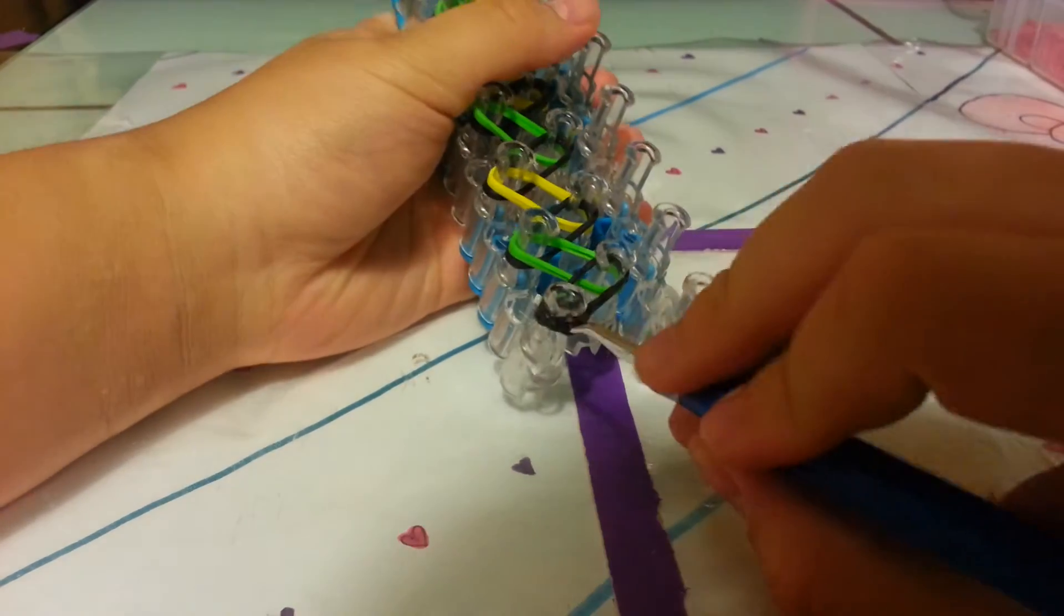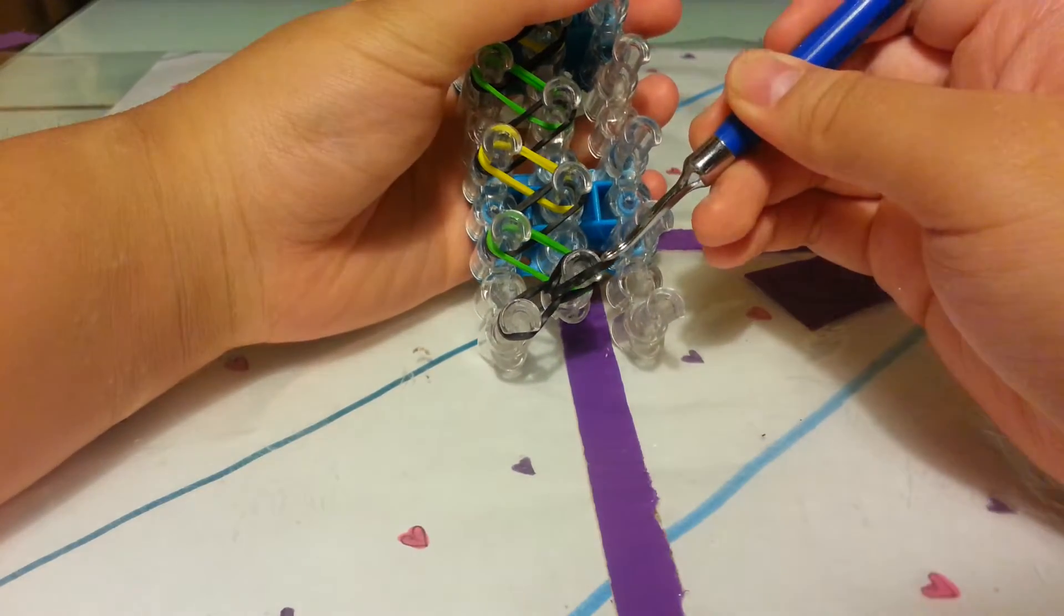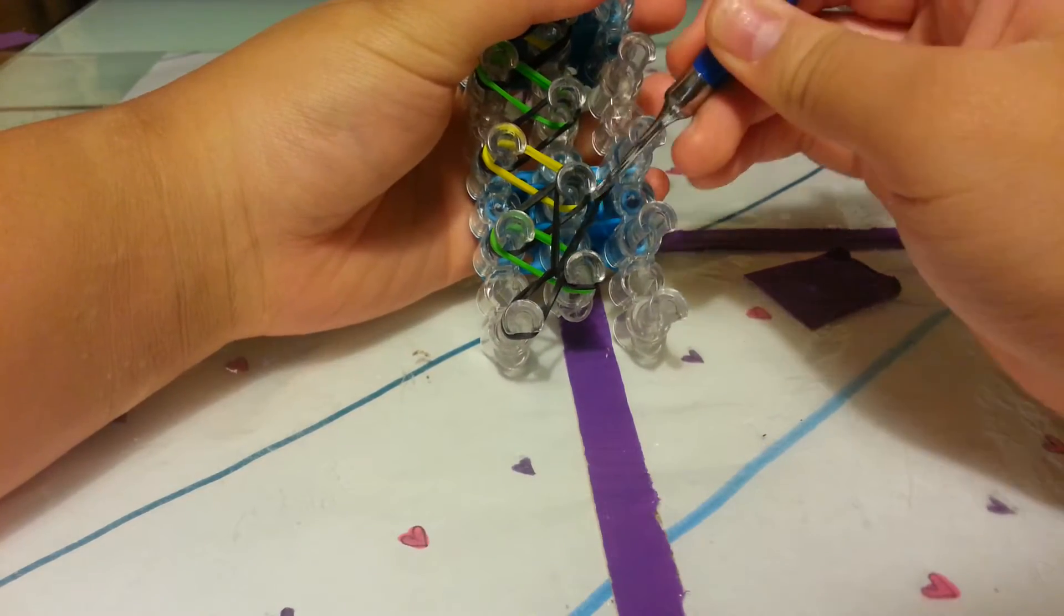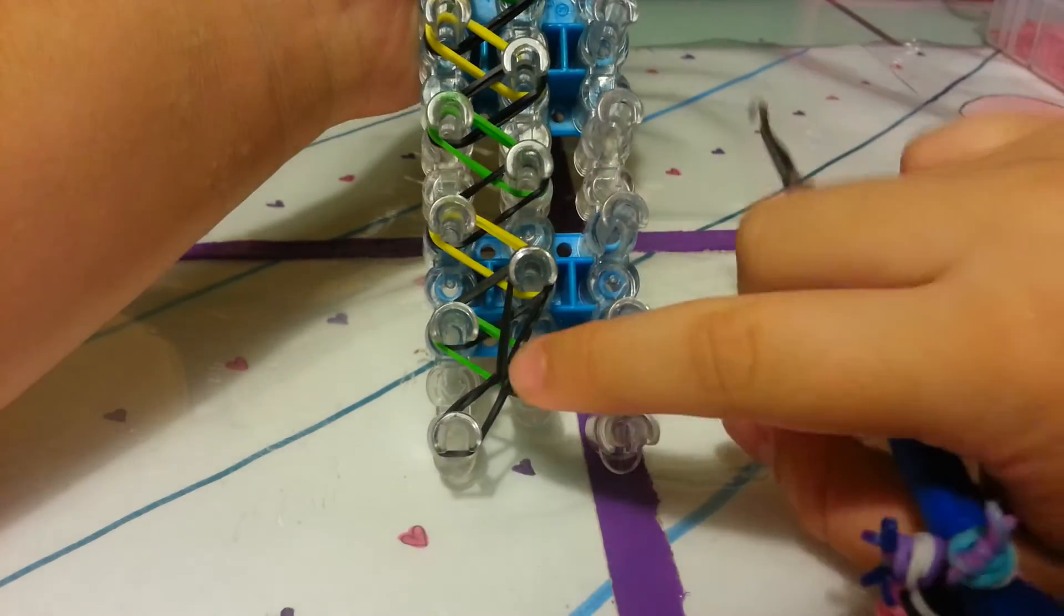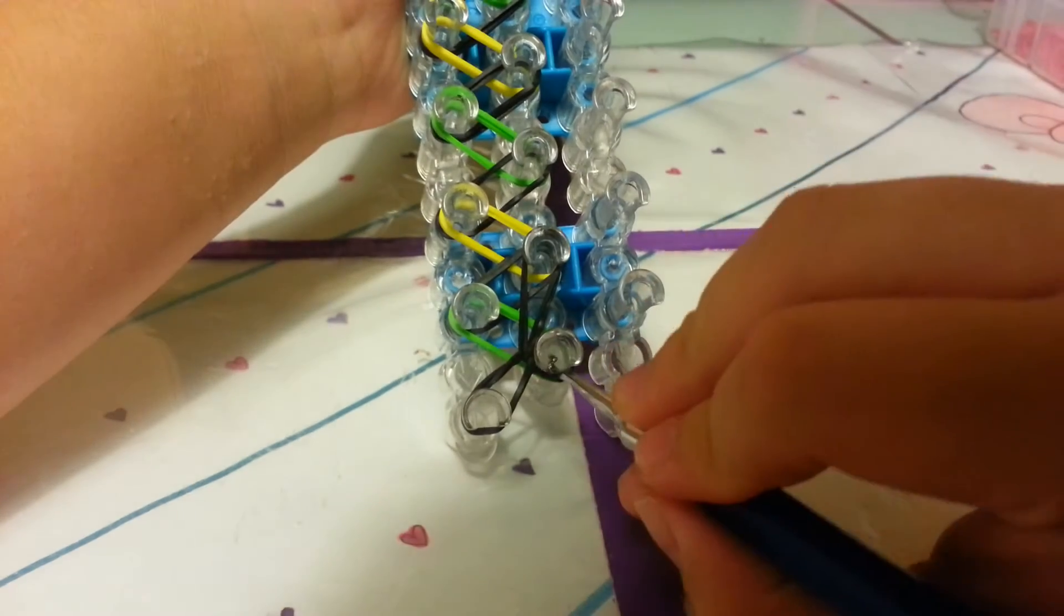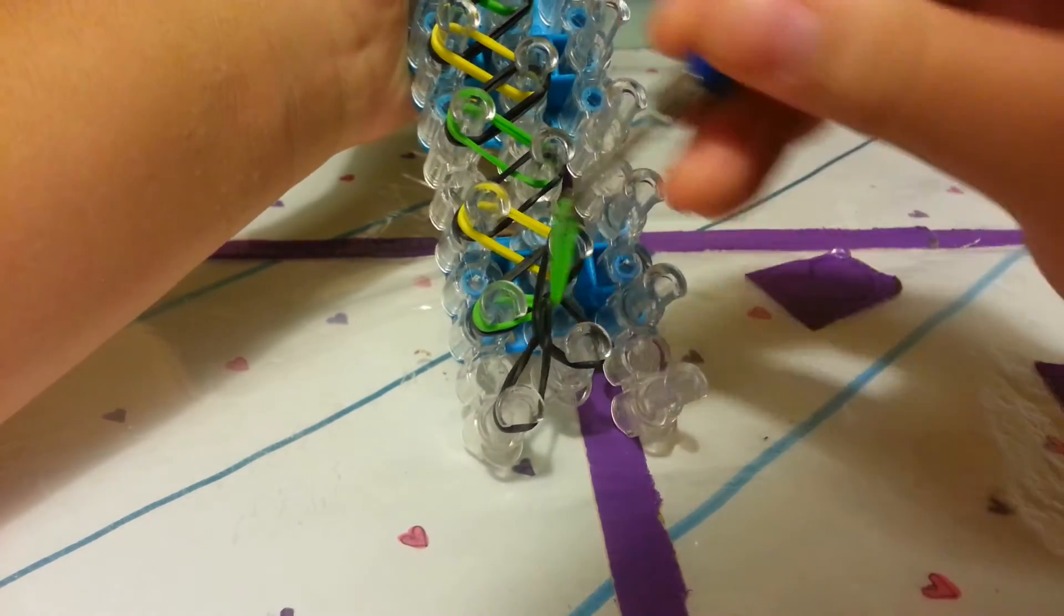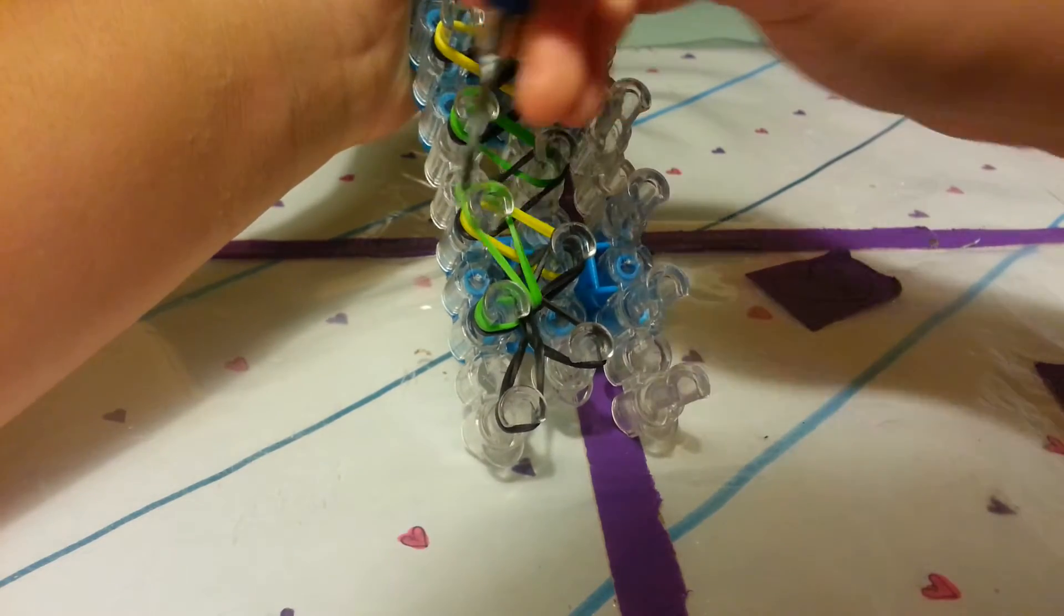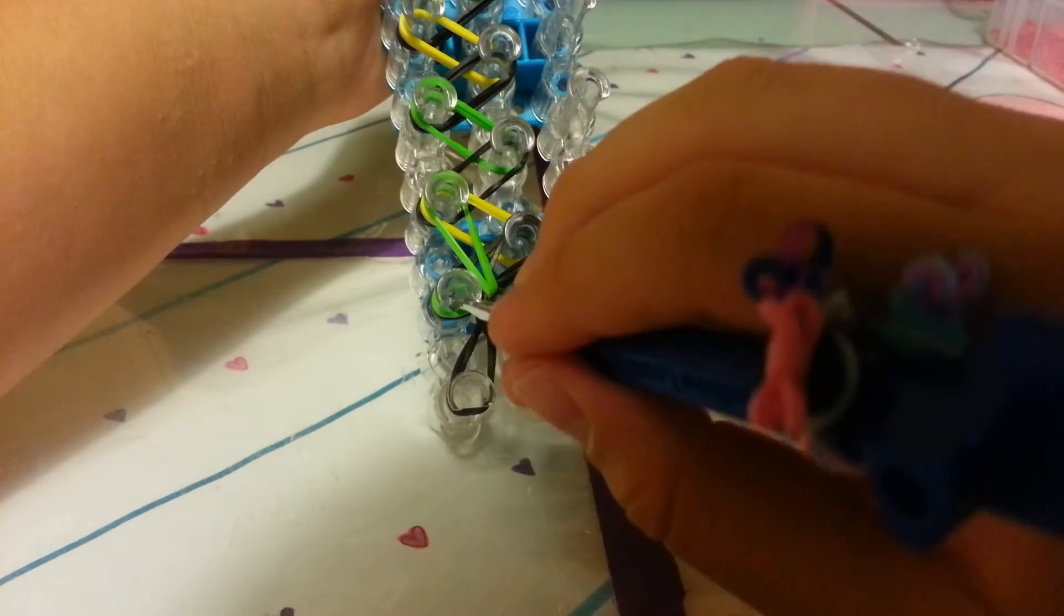Instead of looping it on this side, you want to go up one peg. When you're doing a single chain, you usually go on this peg, but this time you do it on this peg. Then you go in this peg right here, grab the last two bands, and stretch it across diagonally to this peg. You want to keep on doing that.